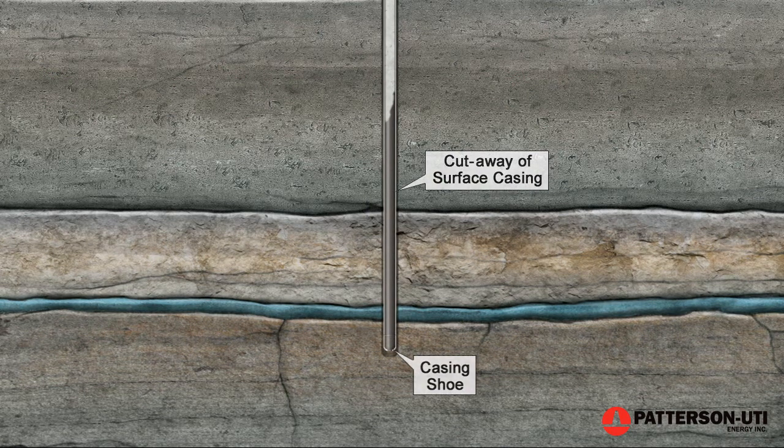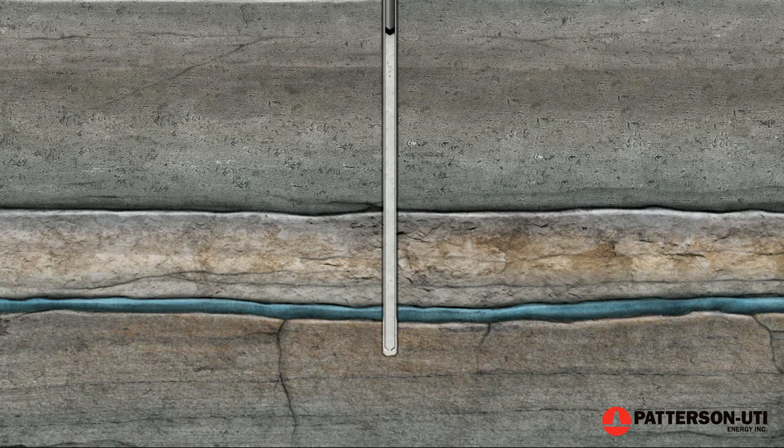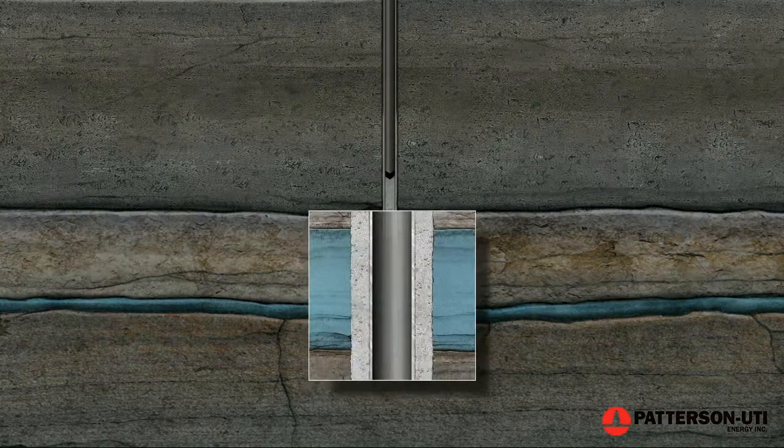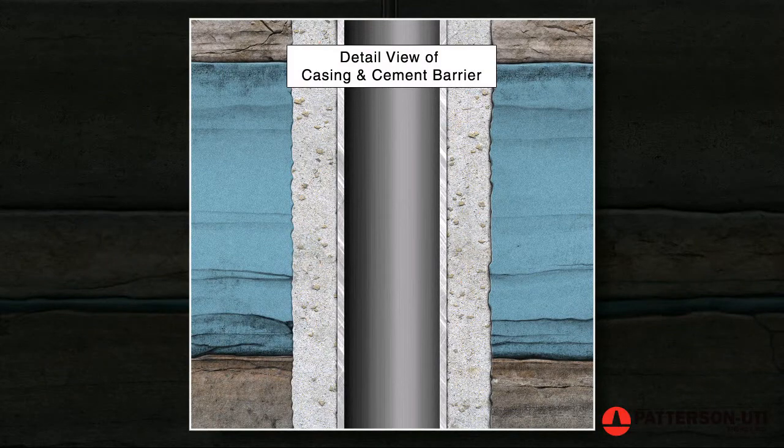Then, cement is pumped down the casing and out through the opening of the shoe at the bottom of the casing. It is then forced up between the casing and the hole, sealing off the wellbore from the fresh water. The cementing process prevents contamination of the fresh water aquifers.